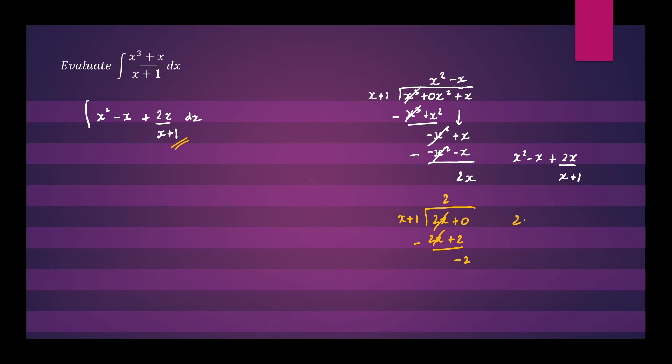So we can rewrite this as 2 minus 2 over x plus 1. So let's rewrite the question as x squared minus x plus 2 minus 2 over x plus 1 dx.